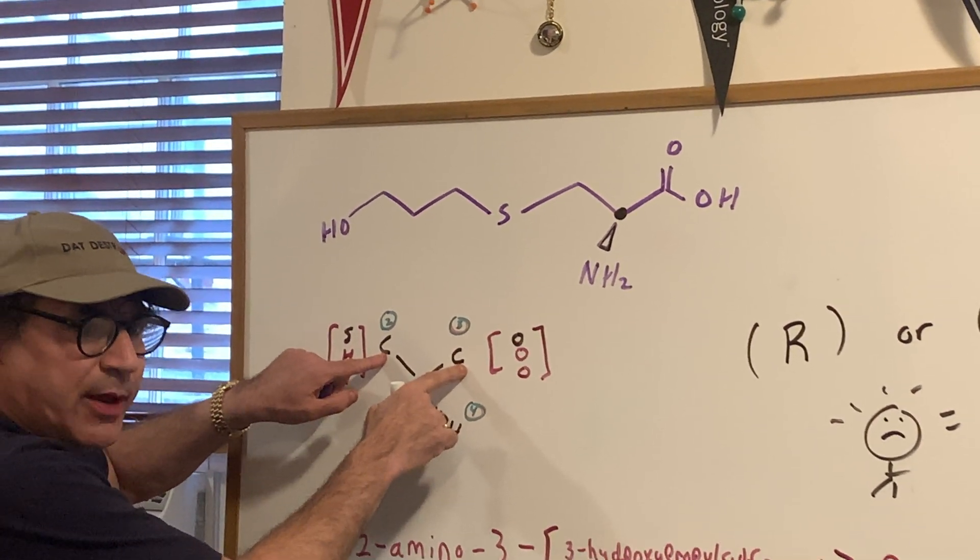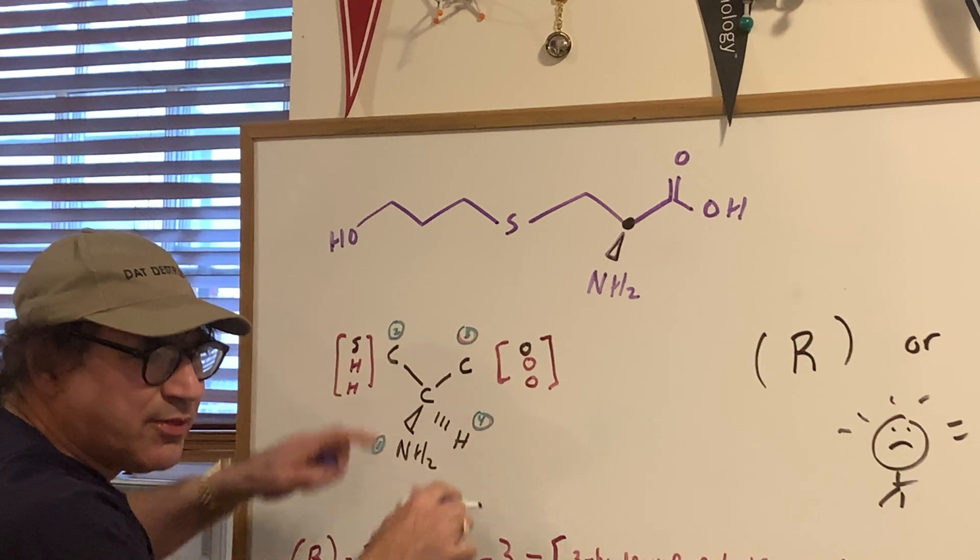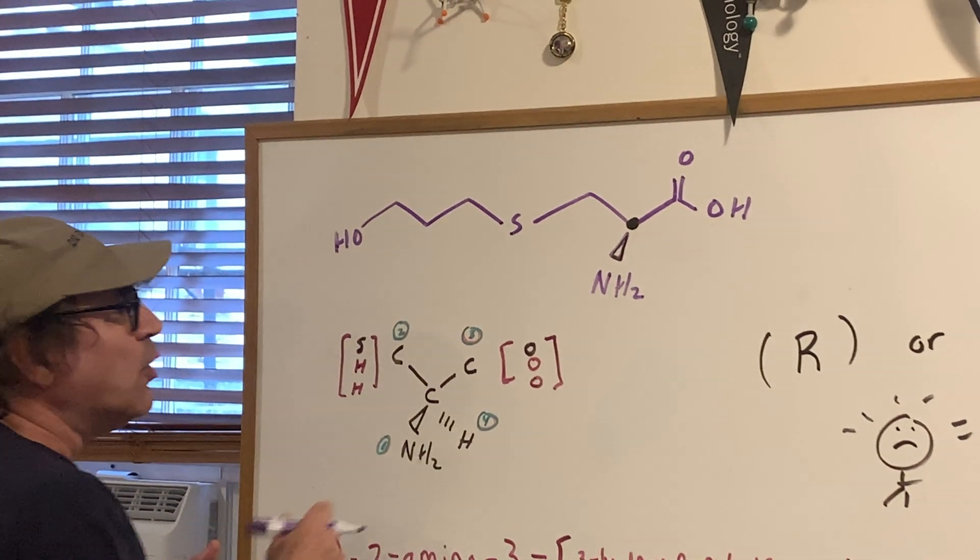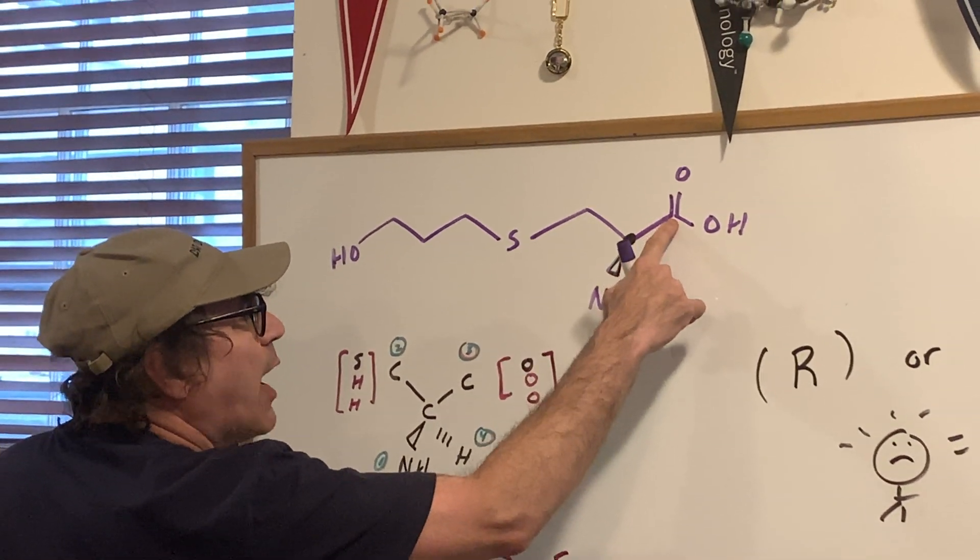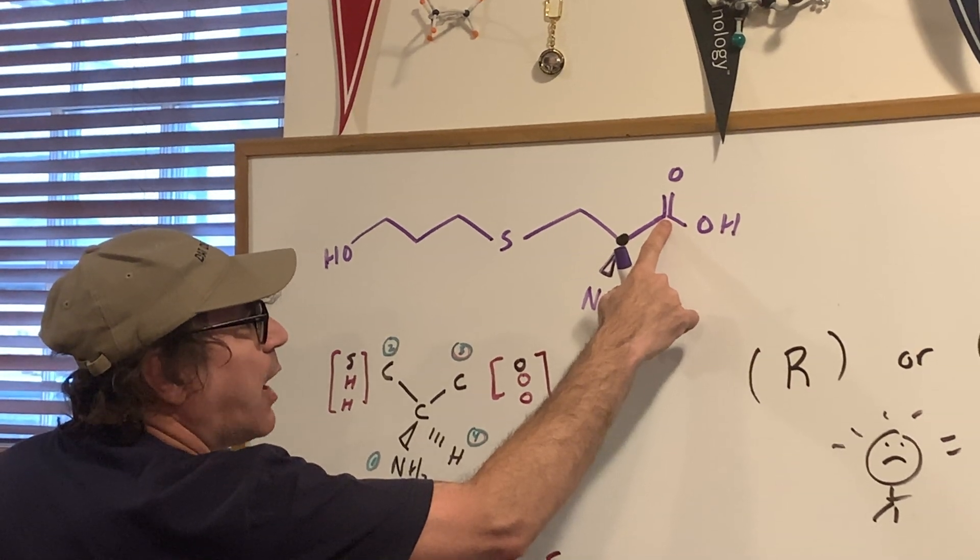And I admit, this is a little bit hard, but if you can do this one, the DAT is going to be a piece of cake. What I would do is I would look at this carbon and look at the three things that are coming off it.